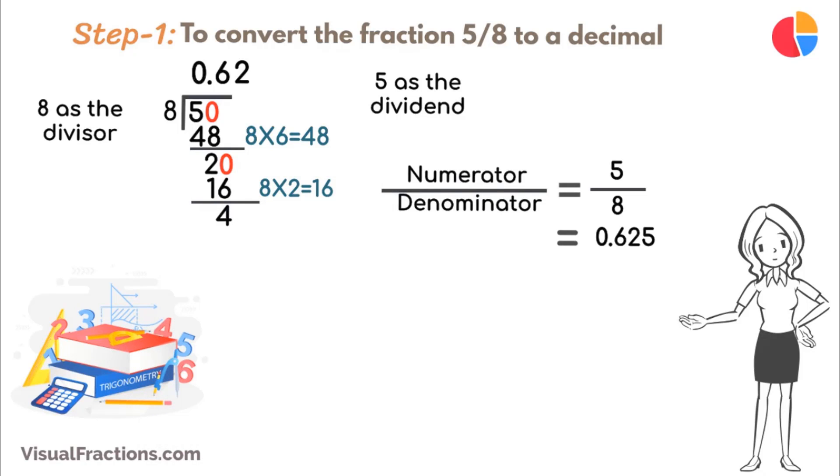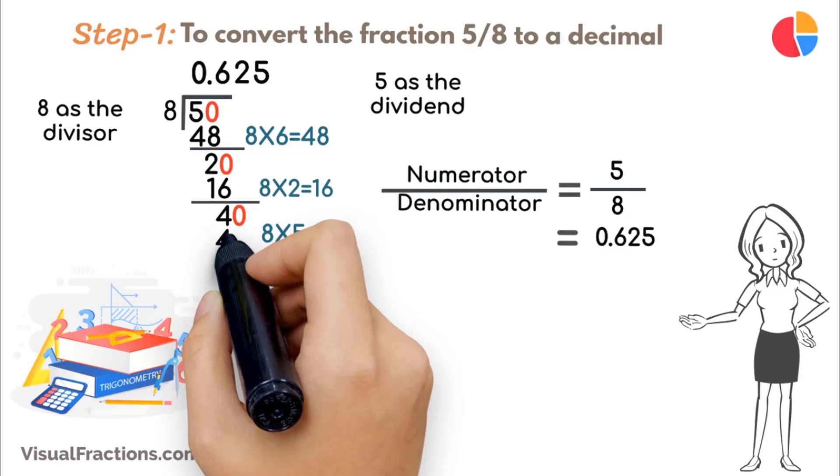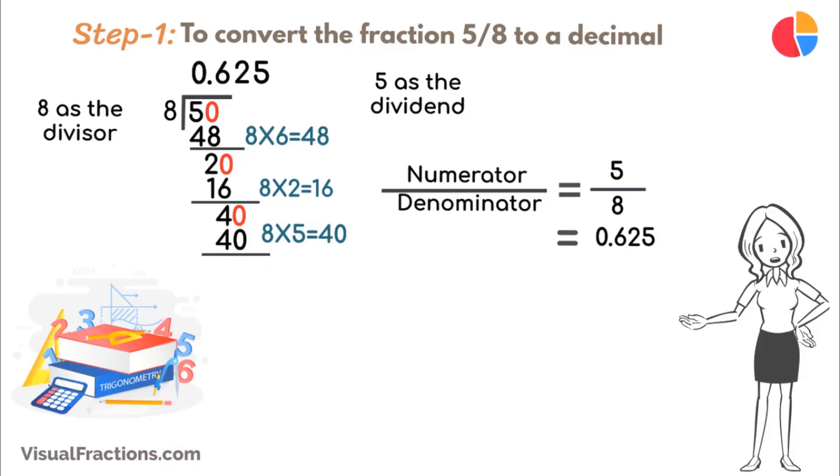Continue this process by bringing down another 0 to make it 40. 8 goes into 4, 5 times, updating the quotient to 0.625. Multiply 8 by 5 to get 40, and subtract this from 40, leaving a remainder of 0. With the remainder now 0, we have found our exact decimal representation, which is 0.625.